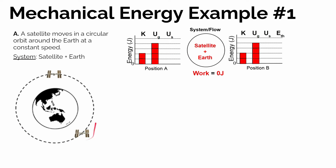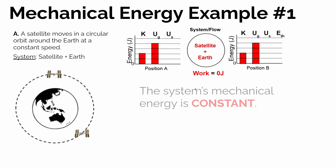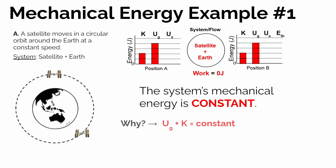We're going to assume there are no other outside forces on the satellite and the earth, so the work is zero — no energy is transferred into or out of the system. Therefore, the system's mechanical energy remains constant, because the kinetic energy remains constant and the gravitational potential energy remains constant, so the sum of the two will be constant.